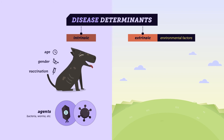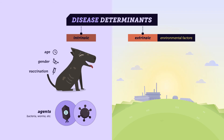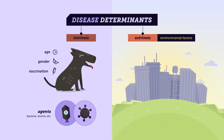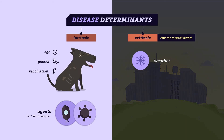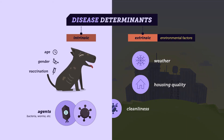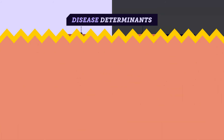Extrinsic determinants are those factors associated with the environment — both the natural environment and the man-made environment. Extrinsic factors include weather, housing quality, and cleanliness.